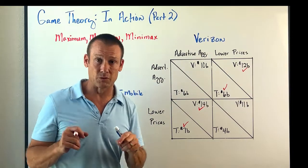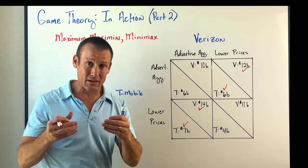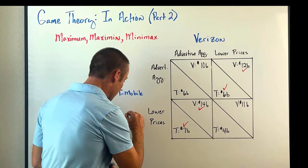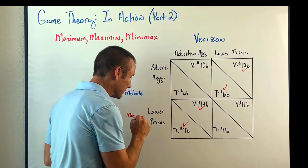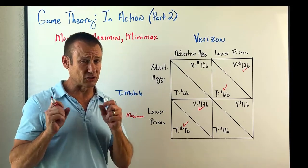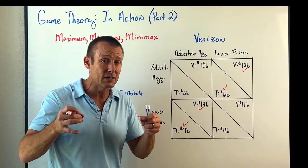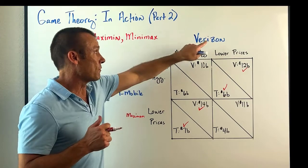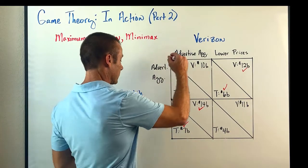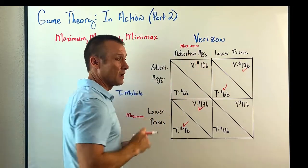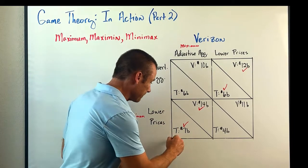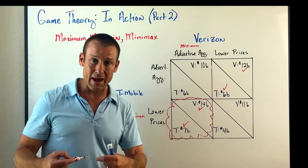We could follow the maximax principle — just go with what gives us our maximum. T-Mobile's payoffs are $6B, $6B, $4B, $7B — the maximum is $7B, so T-Mobile would lower price. Verizon's payoffs are $10B, $12B, $14B, $11B — the maximum is $14B, so Verizon would advertise aggressively. If both follow the maximax strategy, they land in that outcome.